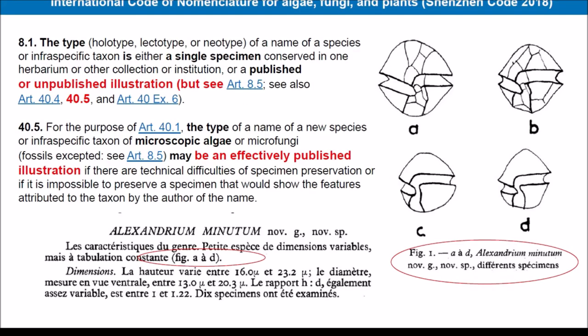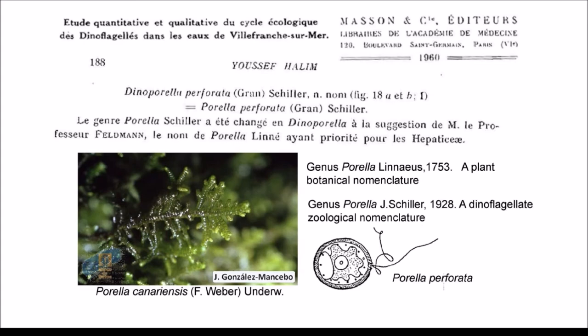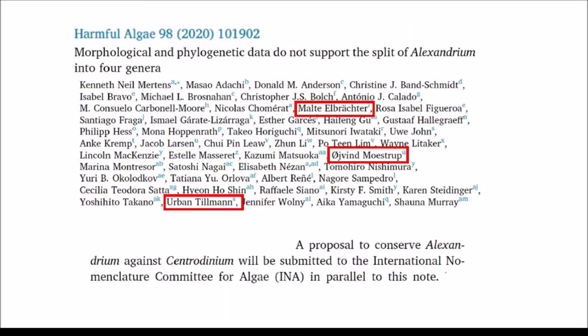Halim described the genus Alexandrium in a pessimistic paper where he didn't provide a type — he provided four types for the type species, which can belong to different species — and he didn't include a Latin diagnosis. But was Halim a botanist or a zoologist? In 1960, Halim proposed the new name Dinopladirene Dinoportella to replace the zoological name Porella. It is clear that Halim was a botanist, and in other papers he used the Latin diagnosis. So Halim is a botanist, he did not follow the rules, and the name Alexandrium is not valid.